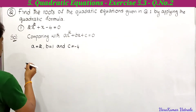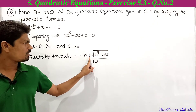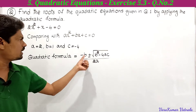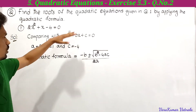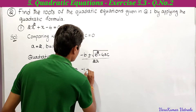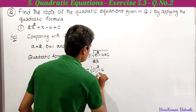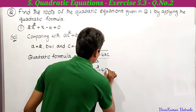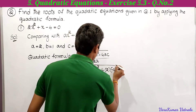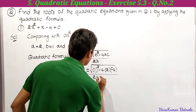Now substituting into the quadratic formula: minus b plus or minus square root of b² minus 4ac, divided by 2a. With b = 1, a = 2, c = −4, we get minus 1 plus or minus square root of 1² minus 4 × 2 × (−4), divided by 2 × 2.